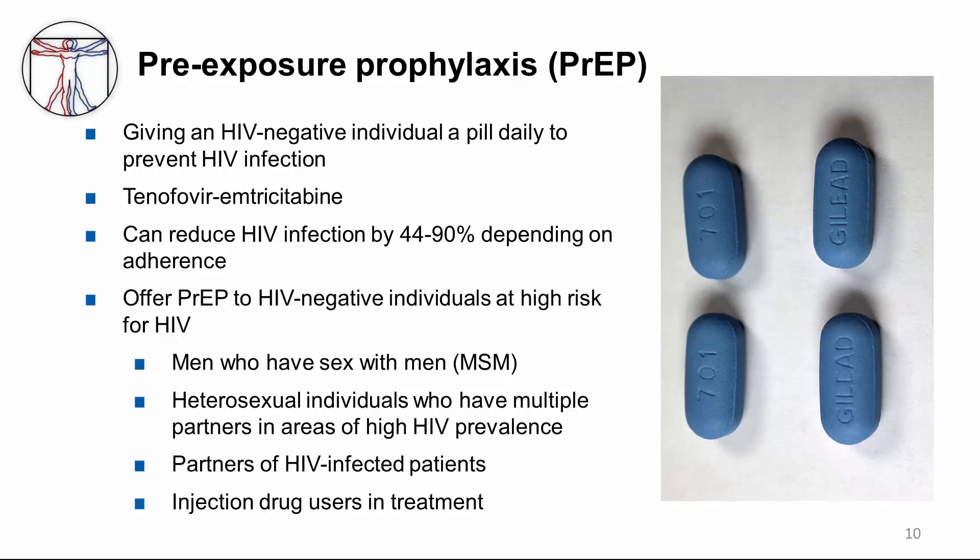Pre-exposure prophylaxis, or PrEP, is defined as giving an HIV-negative individual a pill daily, which is typically Truvada — tenofovir and emtricitabine — to prevent HIV infection. In studies, this can reduce HIV infection by 44% to 90%, depending on adherence. Obviously, the more rigorously you adhere to the regimen, the higher the degree of protection, which was seen in sub-analyses.